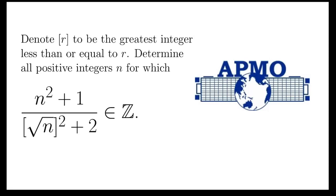Let's take a look at this problem, taken from the Asian Pacific Mathematical Olympiad 2013. It says: find all positive integers n such that n squared plus 1, over the floor function of square root of n, whole squared, plus 2, is also an integer.